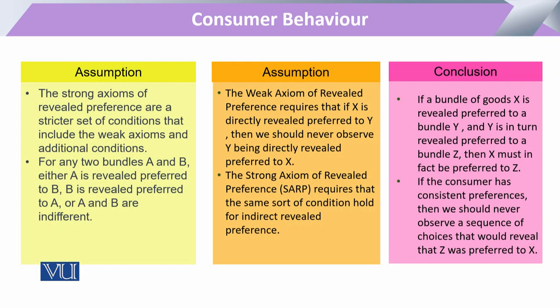Now, if we look at this strong axiom, there are two bundles A and B with two separate, different commodities. Here the completeness property is in front of us. It is possible that the consumer prefers bundle A to B, or it is also possible that the consumer prefers bundle B to A. And it is also possible that they give equal weightage to both — they are indifferent. So these three combinations or three opportunities are available to the consumer.